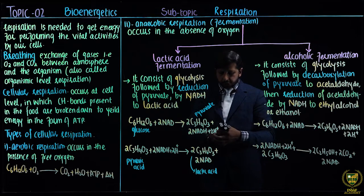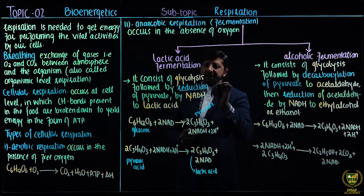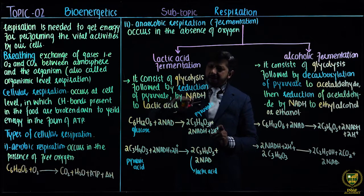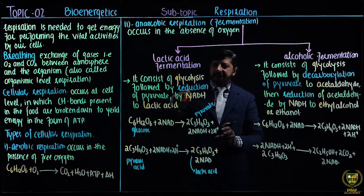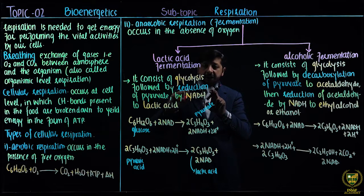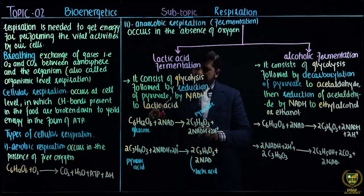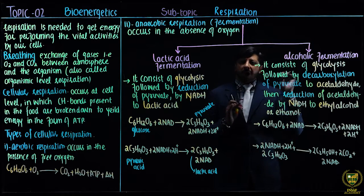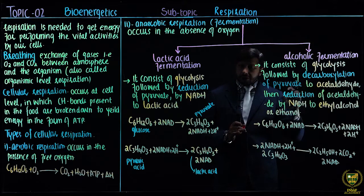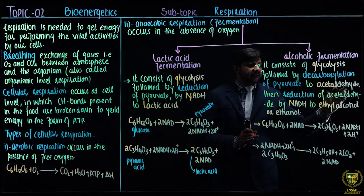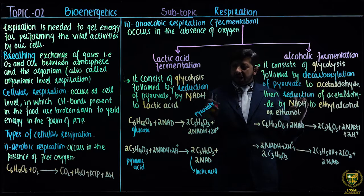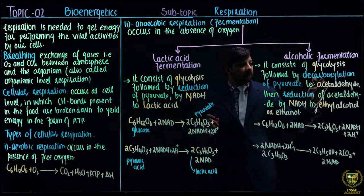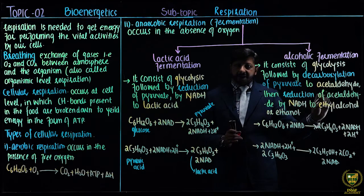The important point to remember: in lactic acid fermentation, after glycolysis, there is a direct reduction of pyruvate by NADH to lactic acid. In alcoholic fermentation, after glycolysis, there is first a decarboxylation of pyruvate — meaning CO₂ is removed — forming acetaldehyde, which is then reduced by NADH to ethanol. The key difference: lactic acid fermentation involves direct reduction of pyruvate, while alcoholic fermentation involves decarboxylation of pyruvate first, then reduction of acetaldehyde.